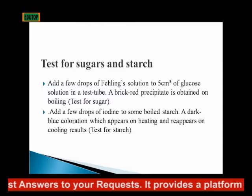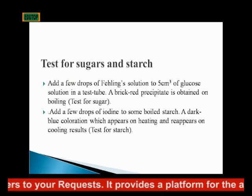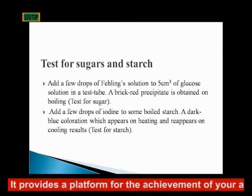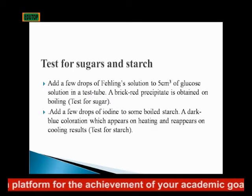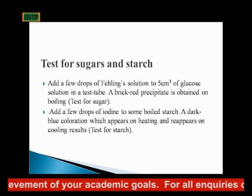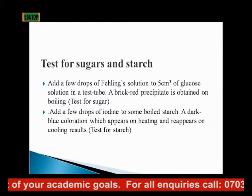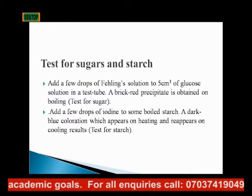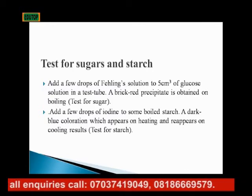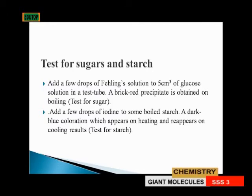Add a few drops of Fehling's solution to 5 cm³ of glucose solution in a test tube. A brick-red precipitate is obtained on boiling. When a few drops of Fehling's solution are added to a solution containing glucose, a brick-red precipitate confirms the presence of sugar. That is the distinctive test for sugar.